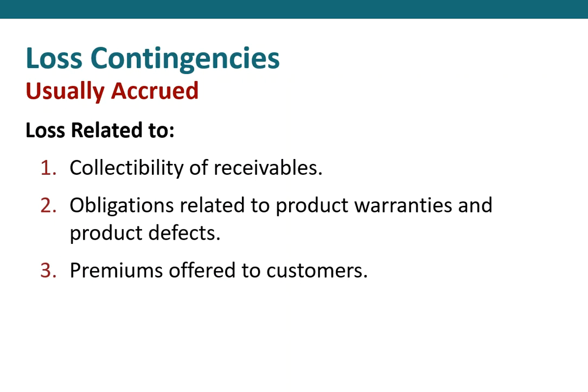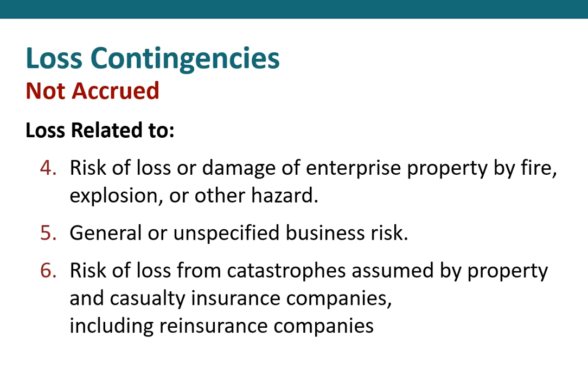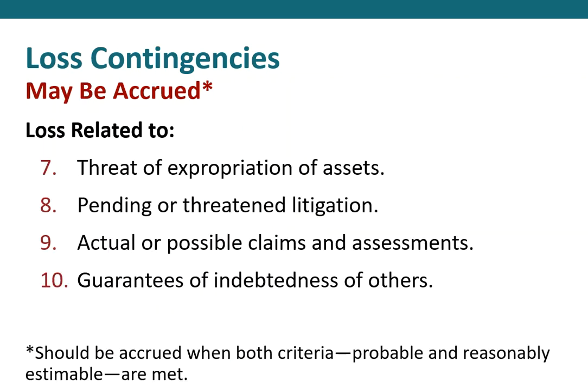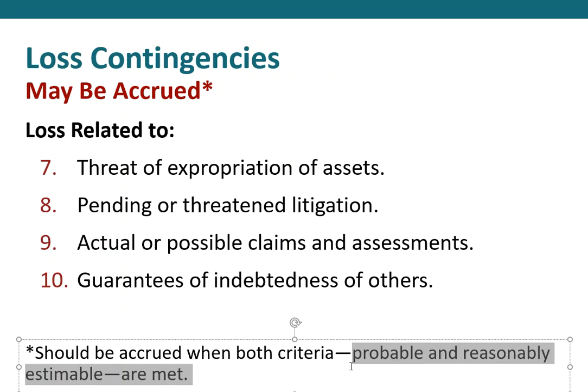Loss contingencies that aren't accrued include the risk of loss or damage by fire, explosion, or other hazards — these are future events with no idea of likelihood or damage amount — and general unspecified business risk, or the risk of catastrophe assumed by insurance companies. We might accrue losses related to threats of expropriation of assets, pending or threatened litigation, actual or possible claims and assessments, and guarantees of indebtedness of others. We accrue these only when both conditions are met: it's probable and we can come up with a reasonable estimate.